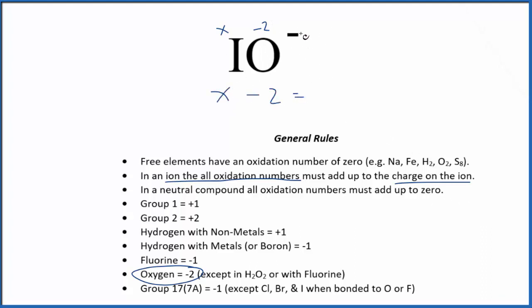So we could just say X minus 2 equals the charge on the ion. We have minus 1. Add 2 to both sides.